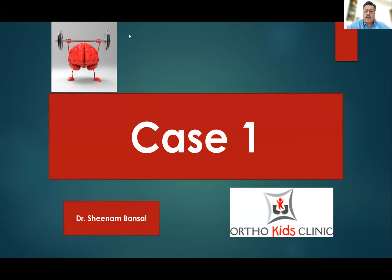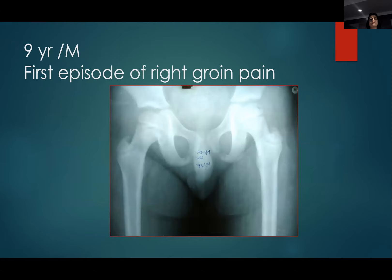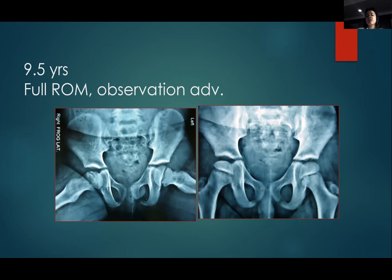Now we move to fellows' cases. The first case: a nine-year-old male presented with right hip pain. Initial X-ray appeared normal. At nine and a half years, full range of motion was present, with a crescent sign on X-ray. The patient was advised observation at that point.